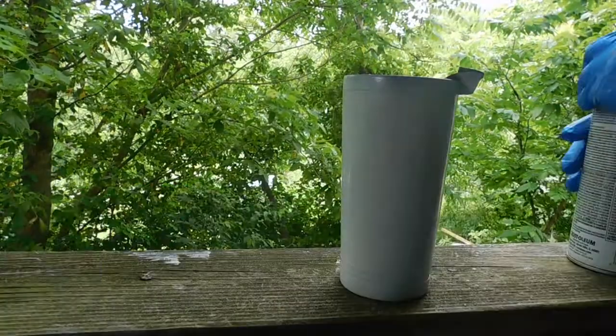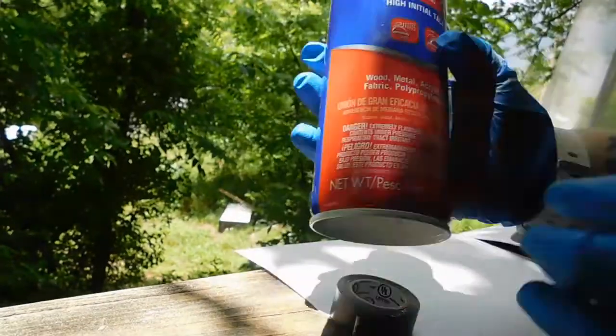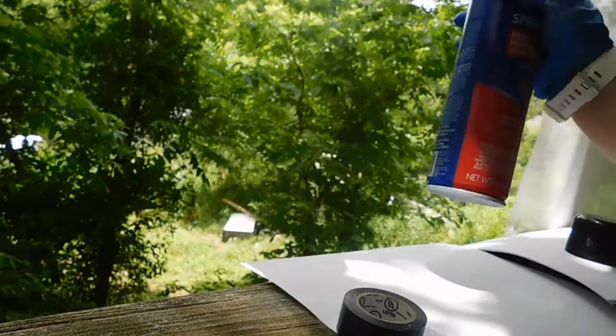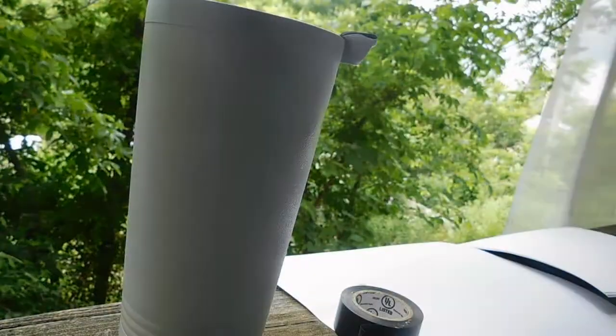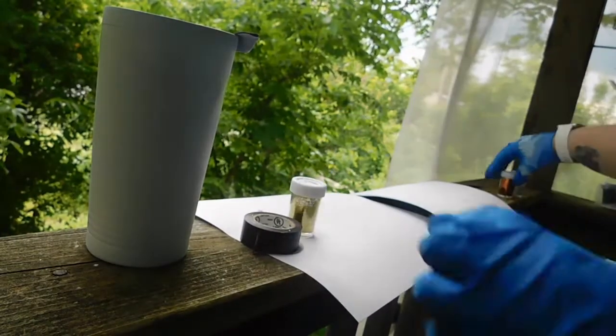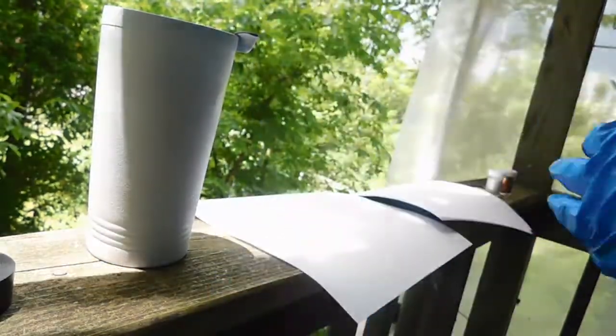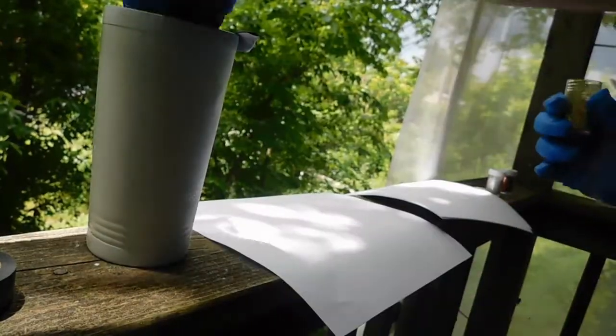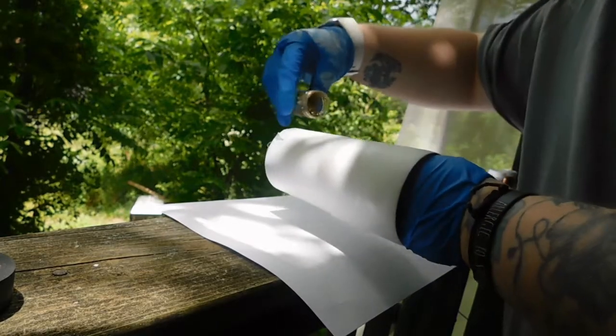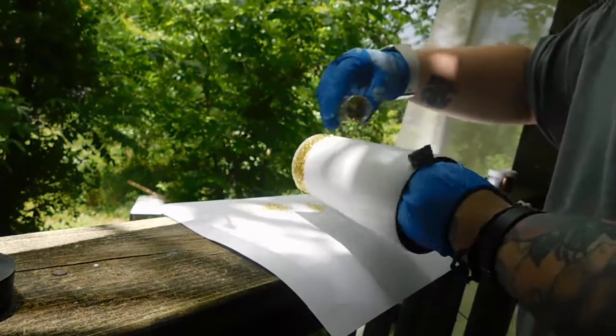Then I'm gonna take Loctite spray adhesive and put it all around my cup to make sure the glitter sticks to it. You're gonna make sure you get it all the way up to the tape. I've got some extra pieces of paper here with my glitter—I've got gold, orange, and white for candy corn colors.